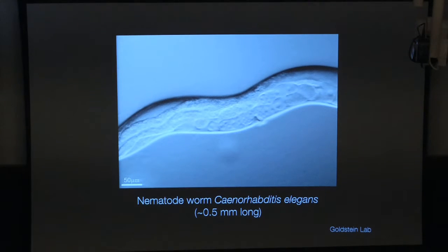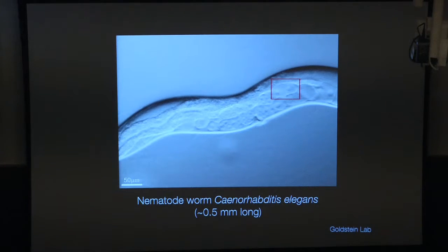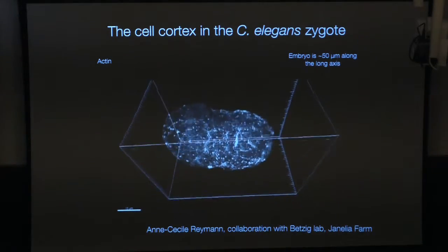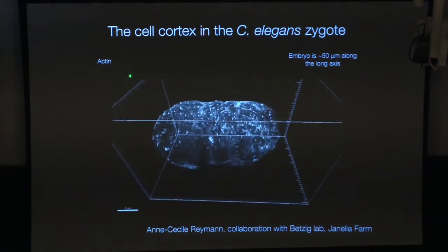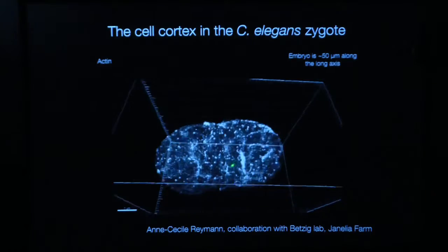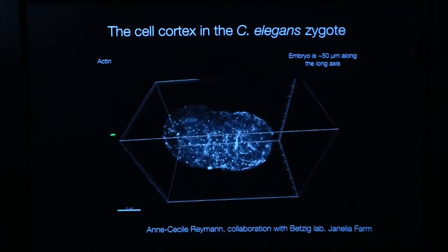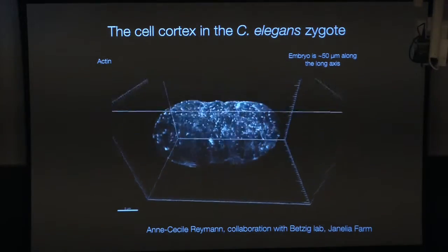C. elegans is a nematode worm that lives all over planet Earth — in your flower pots at home. The worm is about half a millimeter long. We're going to look at the early events, specifically the one-cell stage embryo. The oocyte is fertilized inside the mother, so the first couple of cell divisions still take place inside the mother. In the lab, we extract the one-cell embryo and put it under the microscope. Here we've labeled actin and used a spinning disc microscope.